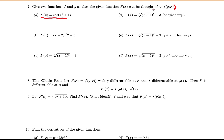You have to identify the inside and outside pieces correctly so that when you compose the two pieces, the outer function would be f of x. In this case, the outside function could be thought of as the cosine of x, and that would make the inside function g of x equal to x squared plus 1.